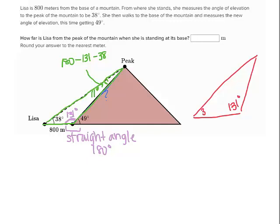So I've got this triangle where the angles are 131, 38, and 11 degrees. The distance from here to here is 800 meters, and I would like to know this side. Given that I have all of the angles and one of the sides, that tells me I'm going to use the law of sines.